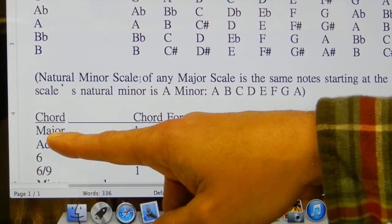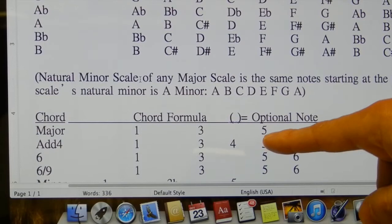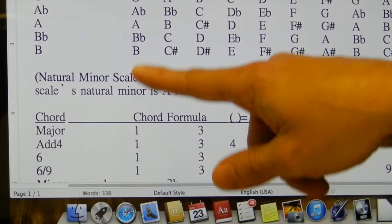The major chord, any major chord, is made out of the first, the third, and the fifth note of its scale.